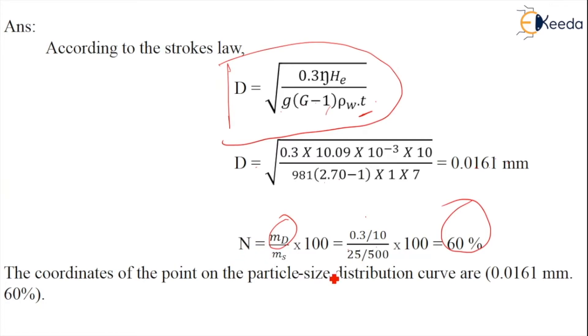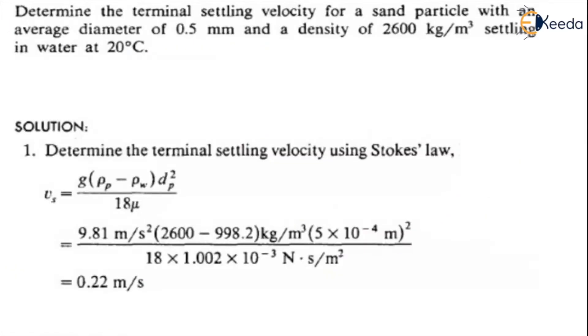The coordinates of the point on the particle size distribution curve are 0.0161 mm with 60 percent. Coming to the next problem.